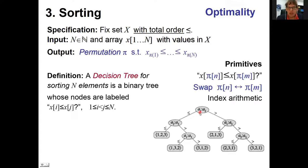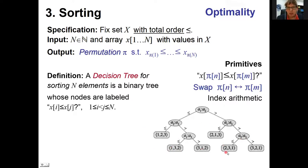In the example, here we compare element 1 with element 2 — if it's less than, we move left; if greater, we move right. Here's another internal node comparing the second and third elements, and here the first and third. Leaves are labeled with permutations. For example, the identity permutation, or another permutation where 1 maps to 2, 2 maps to 3, and 3 maps to 1.